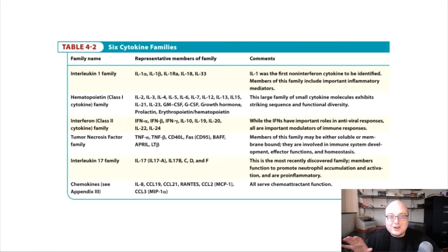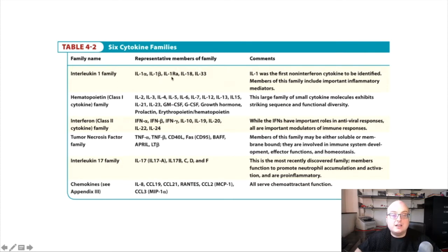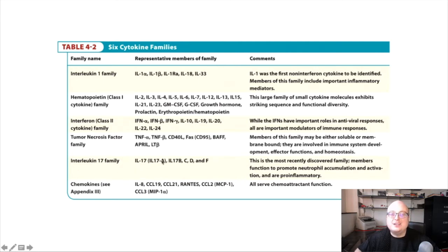These are our six families that we've been discussing. I want to situate them back to this table. The IL-1 family is made up of IL-1α, IL-1β, as well as a molecule called IL-1RA, or the IL-1 receptor antagonist, and some other molecules. The TNF family includes TNF-α, TNF-β, as well as a molecule called FAS. And the IL-17 family is made up of all the different IL-17s.